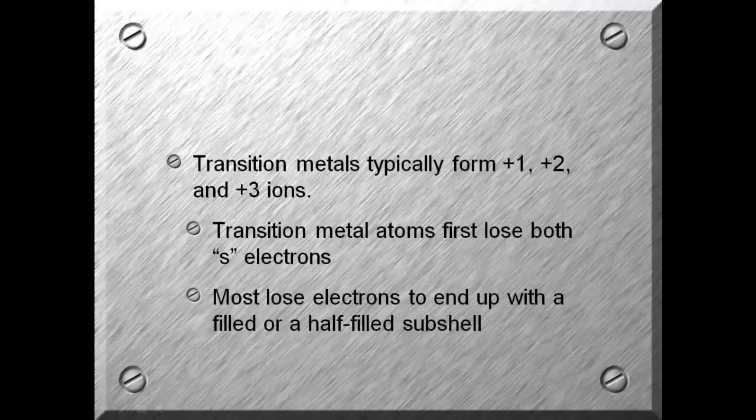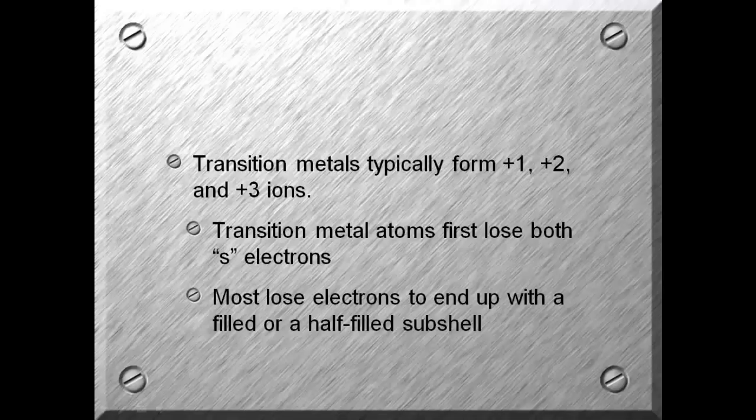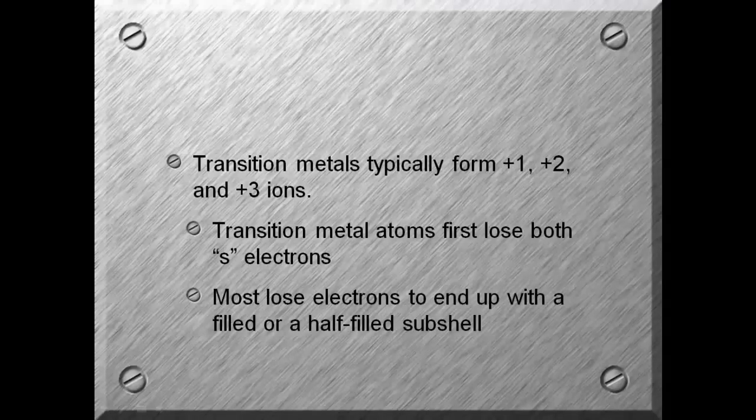Transition metals will typically form plus one, plus two, and plus three ions. They will lose from their s electrons, and then most electrons will be lost to end up with a filled or a half-filled subshell.